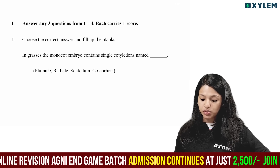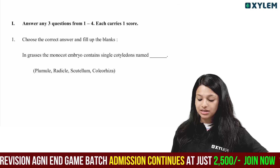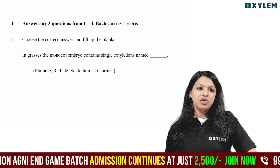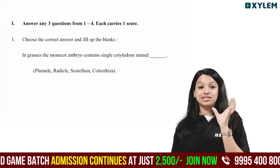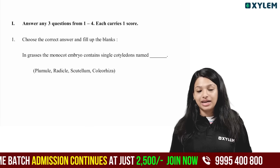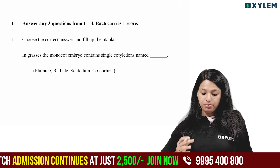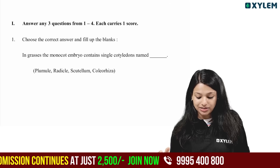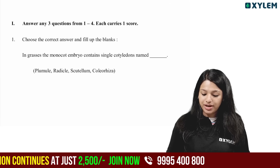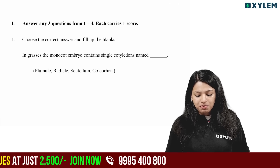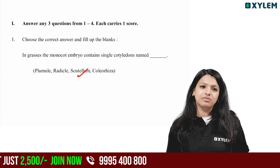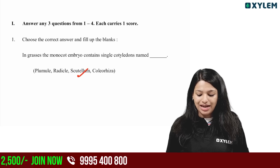In grasses, Monocot contains a single cotyledon. In monocots, we call it a single cotyledon — plumule, radicle, scutellum, coleorrhiza. The correct option is scutellum.